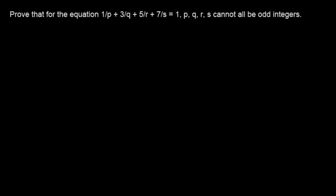I'm just going to rewrite this. We're saying that 1/p + 3/q + 5/r + 7/s equals 1. We're considering this equation right here.